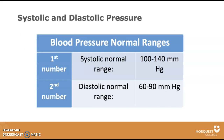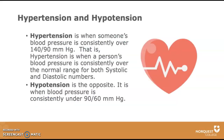Systolic pressure and diastolic pressure each have normal ranges. You may have heard the terms hypertension and hypotension. Hypertension is when someone's blood pressure is consistently over 140 over 90 mmHg. Hypotension is the opposite — it is when blood pressure is consistently under 90 over 60 mmHg.